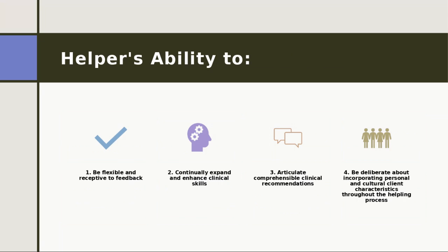All eight components can be distilled down to four basic things the helper must be able to do. Number one, they have to be flexible and receptive to feedback. There are certain parameters for effectively implementing interventions, but within that you have some flexibility to fine-tune the intervention for the particular client. You also have to be receptive to feedback — from the client as well as from colleagues you may consult with or supervisors.